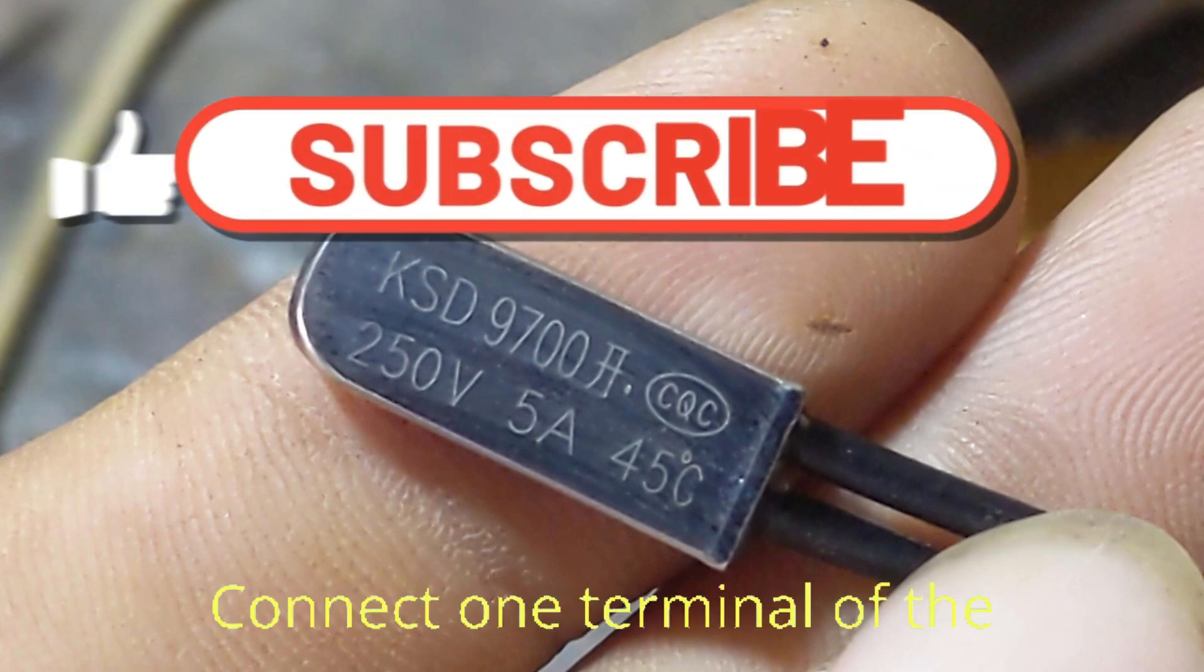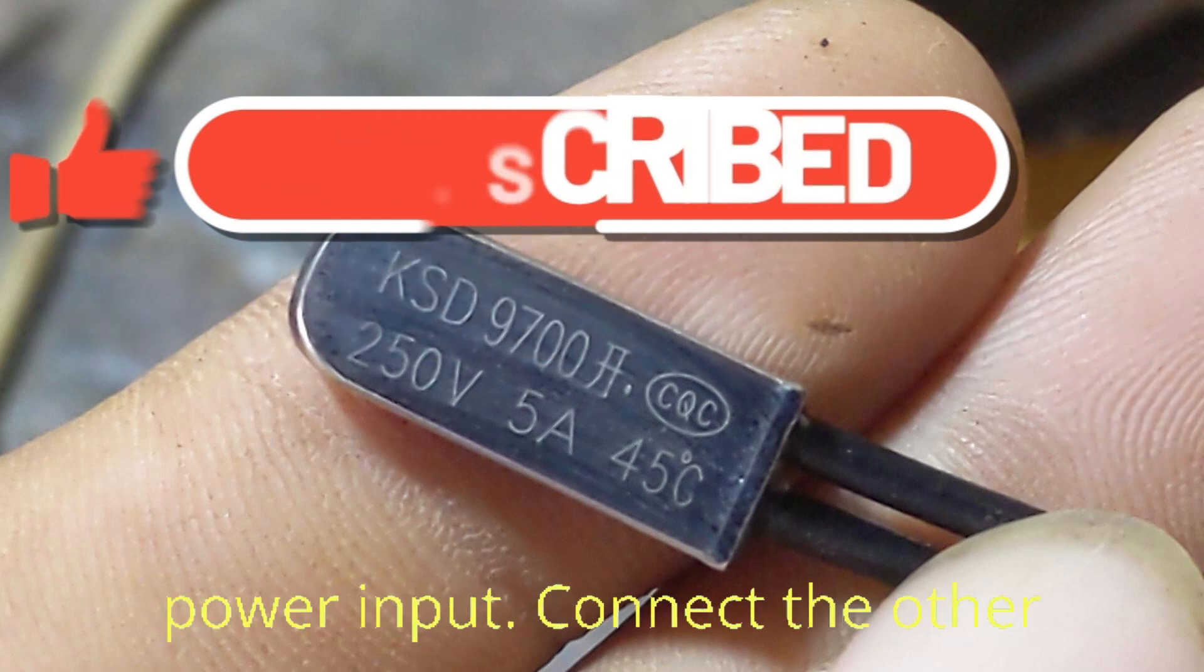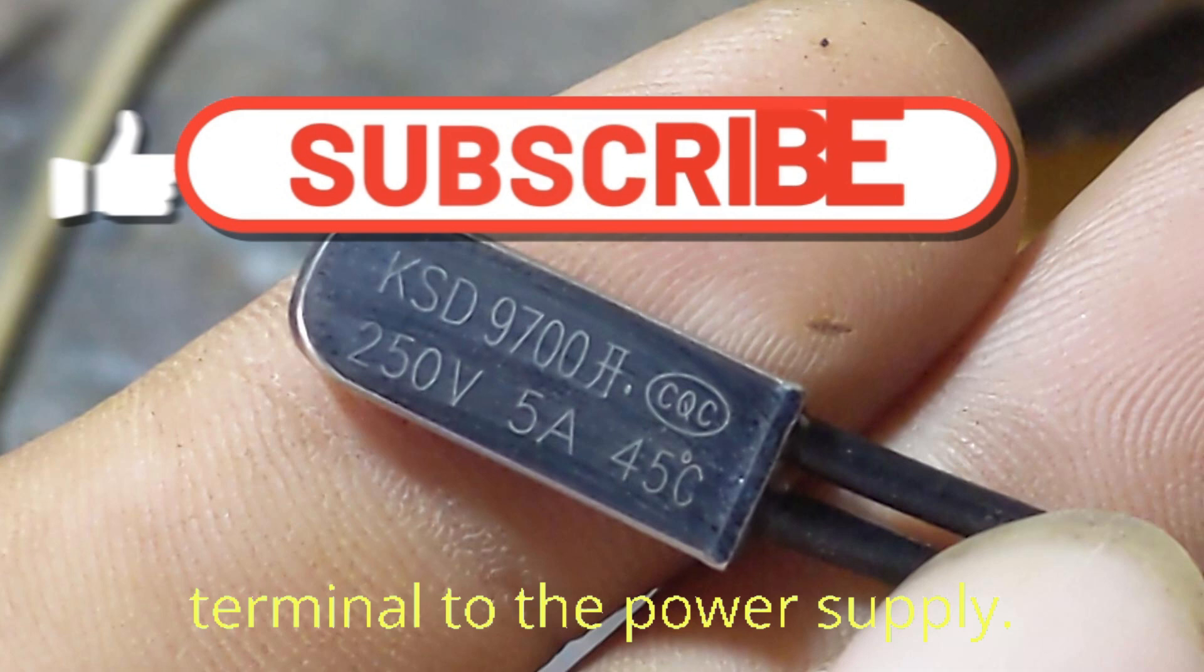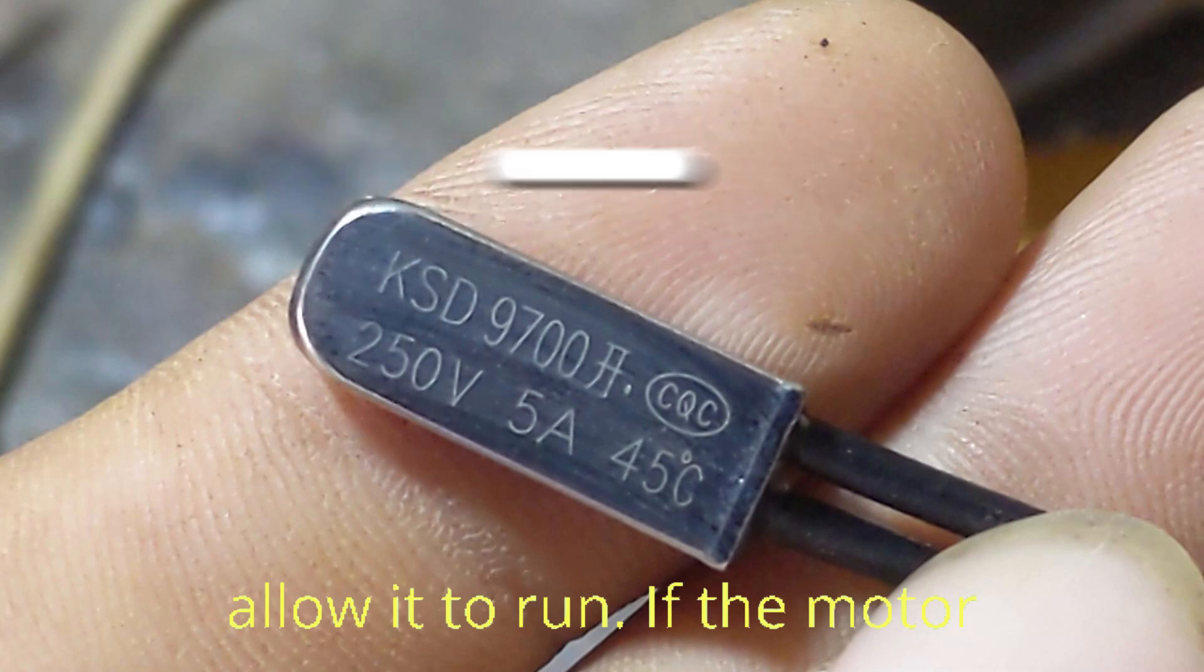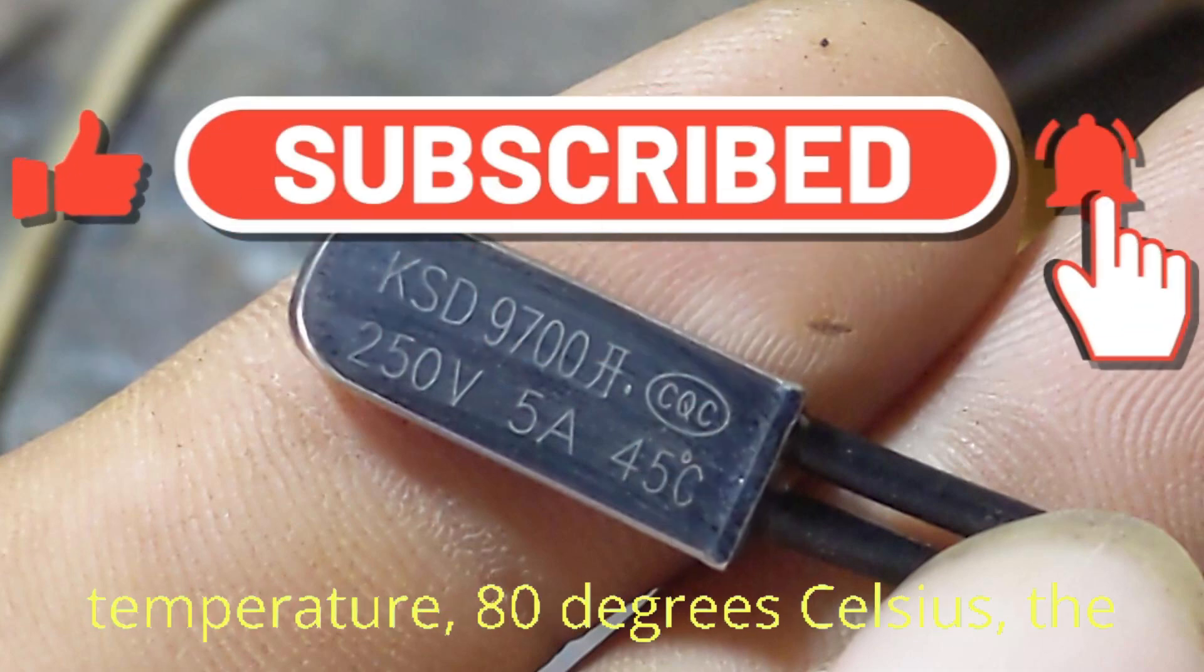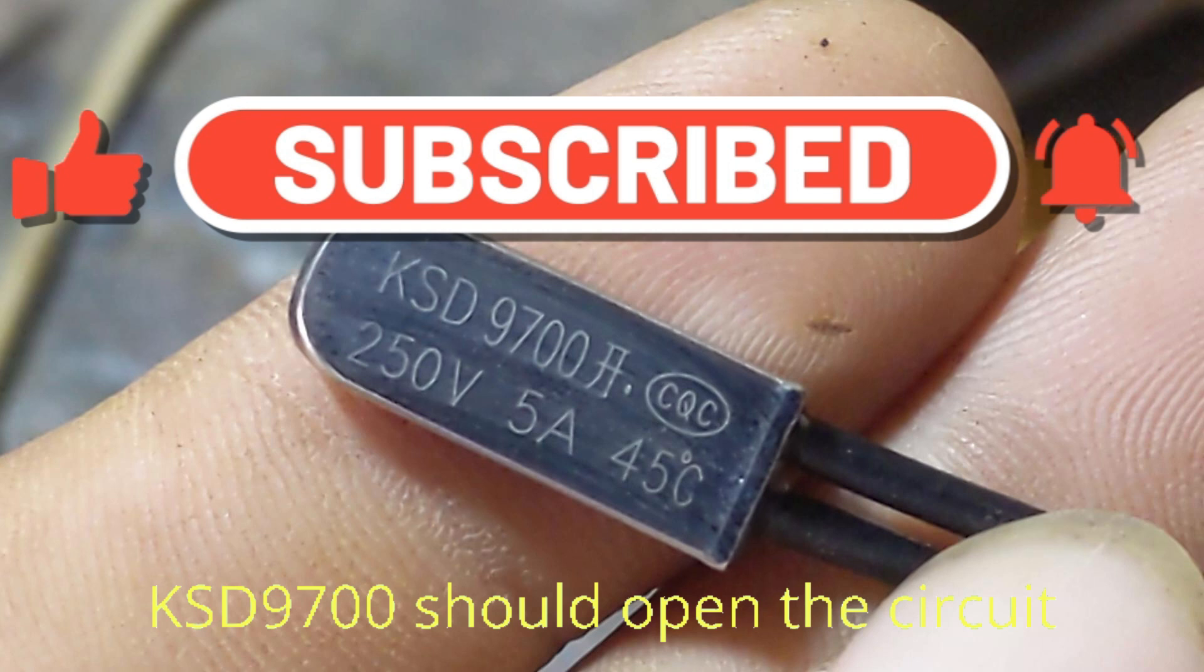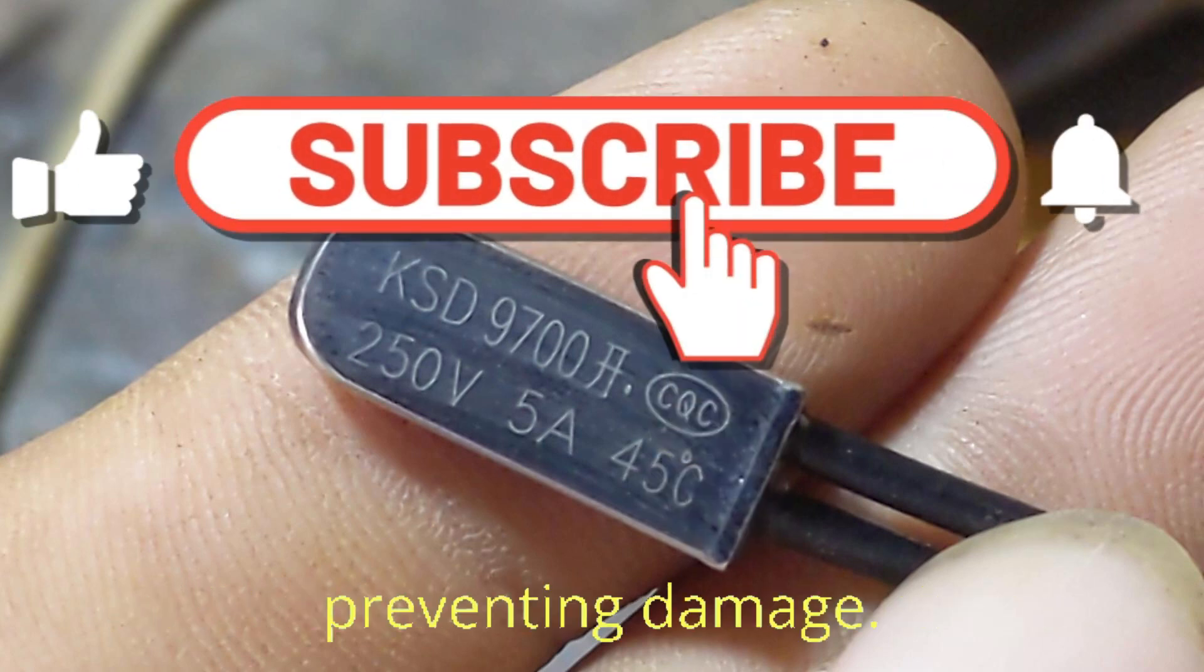Wire the switch: connect one terminal of the KSD 9700 to the motor's power input. Connect the other terminal to the power supply. Test the setup: power on the motor and allow it to run. If the motor overheats and reaches the preset temperature of 80 degrees Celsius, the KSD 9700 should open the circuit and cut off power to the motor, preventing damage.